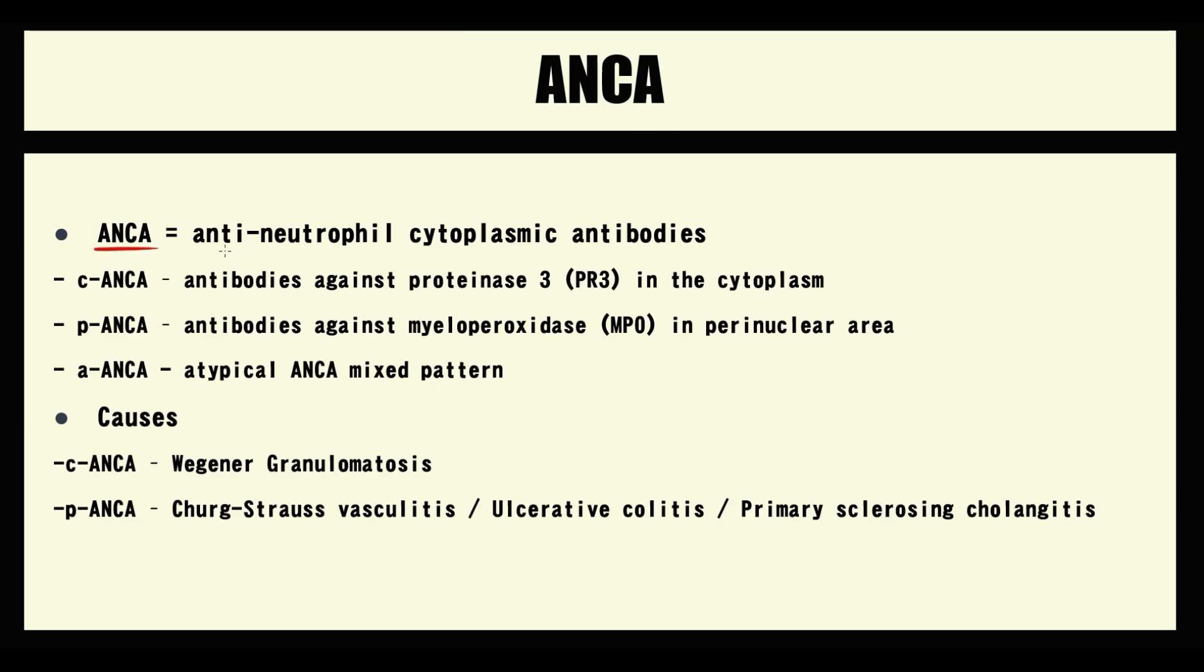ANCA stands for Antineutrophilic Cytoplasmic Antibodies. We have three types of ANCA. C-ANCA is antibodies against proteinase 3, which are located in the cytoplasm. P-ANCA is antibodies against myeloperoxidase, which are located in the perinuclear area. A-ANCA is atypical ANCA that has features from C and P ANCAs. We call this an atypical pattern.